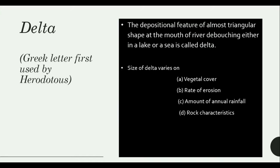When we talk about vegetation cover, the greater the vegetation cover, the more the deposition of sediment — or agglomeration of sedimentation — happens at the mouth of the river. The rate of erosion also matters, the amount of annual rainfall matters, and the rock characteristics — the lithology — also matter. There are harder rocks and softer rocks; harder rock is not as prone to erosion unlike sedimentary or softer rock. So we now know what Delta is and how their size varies.